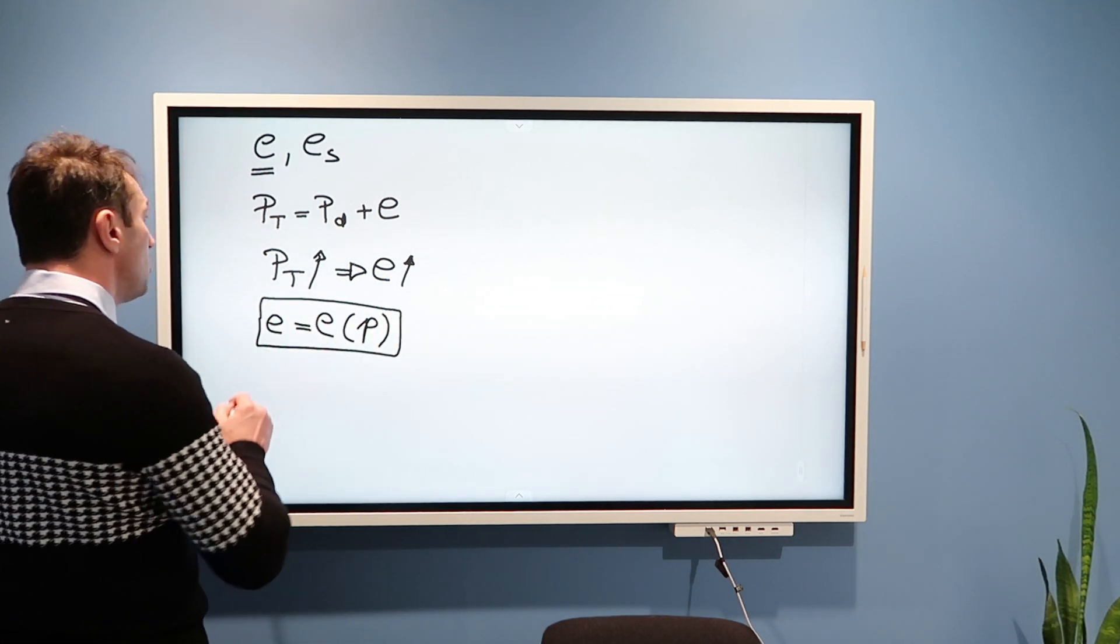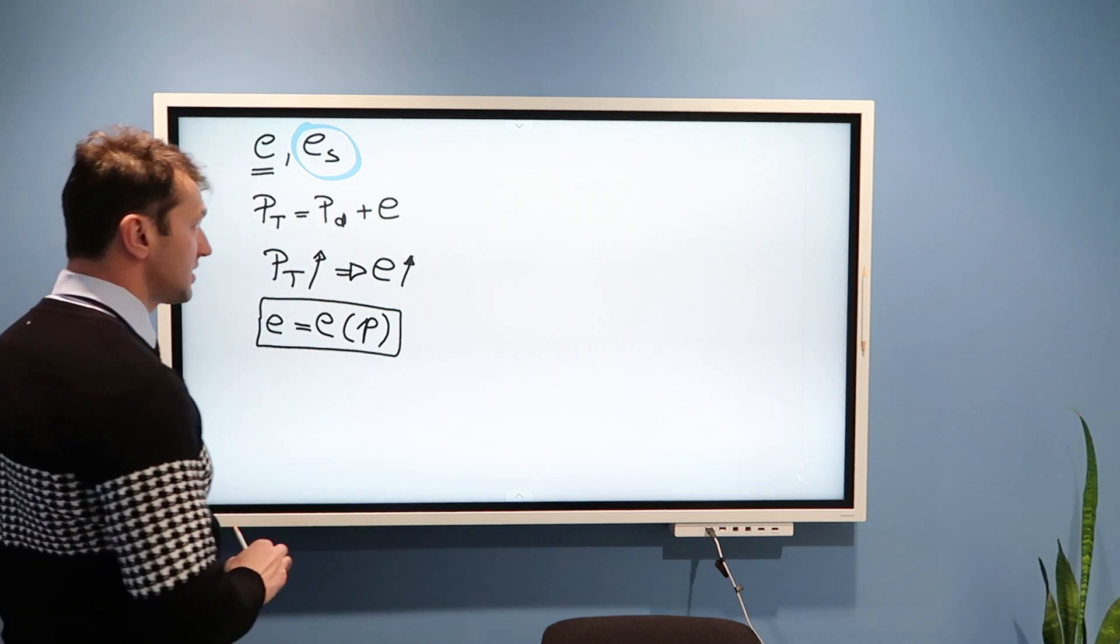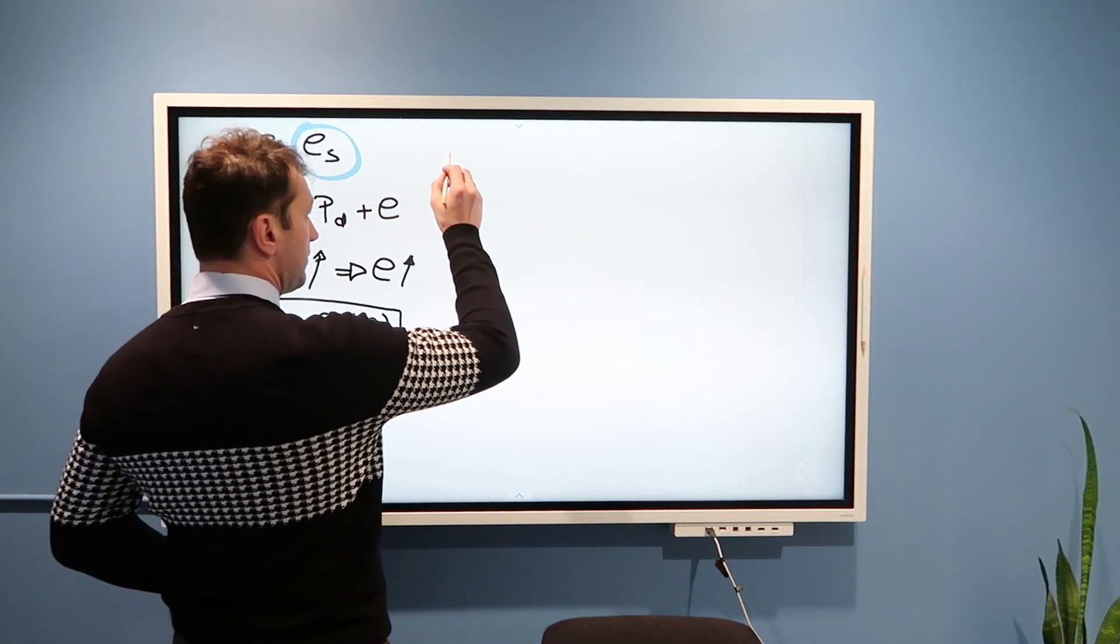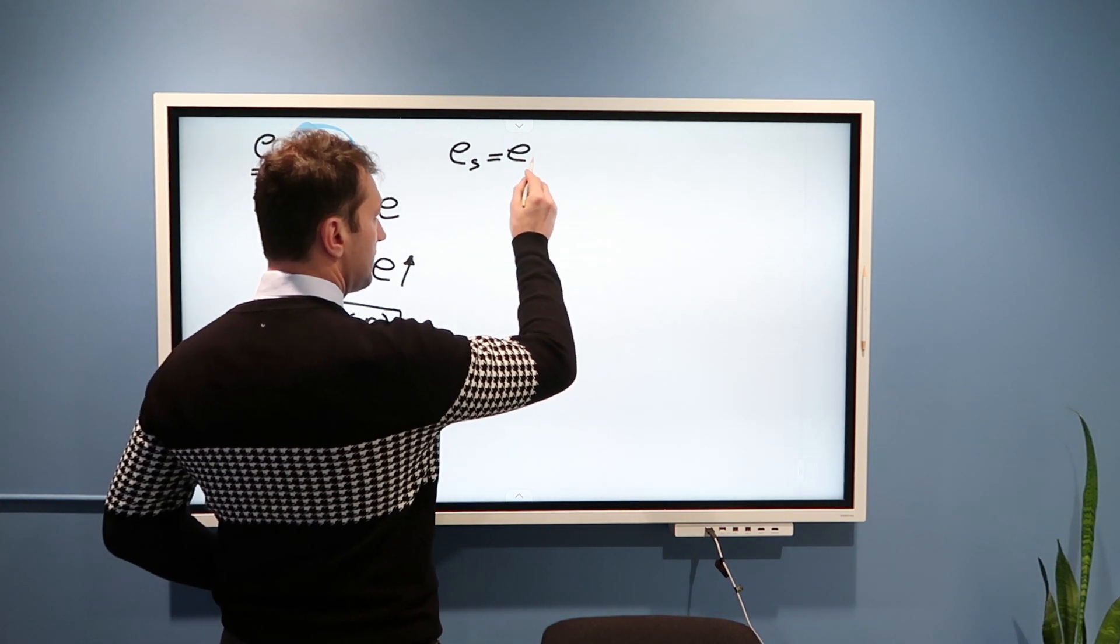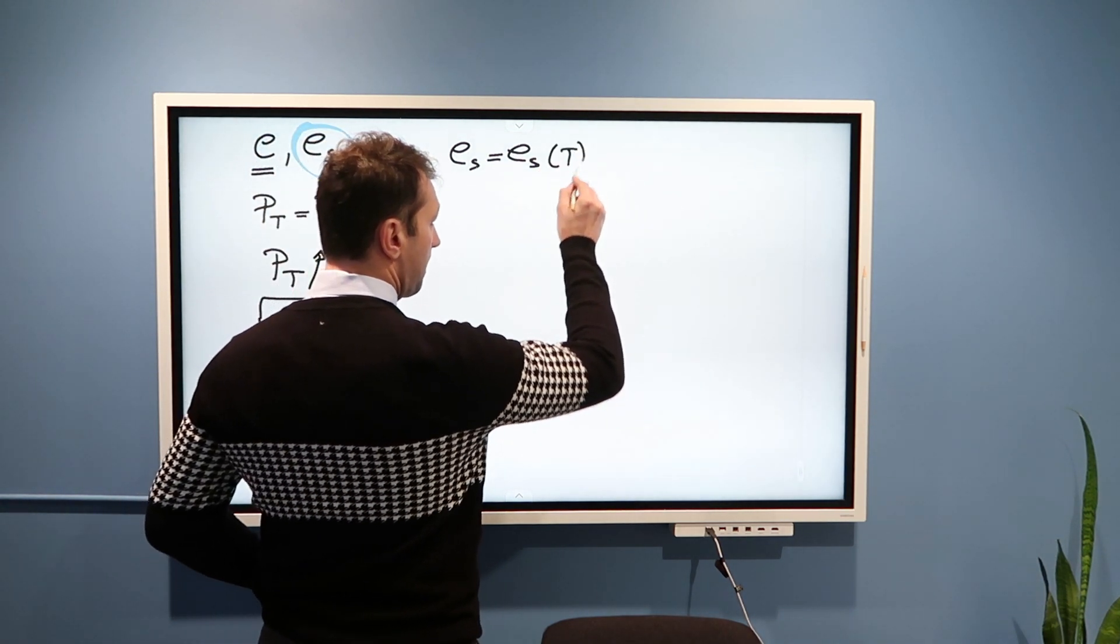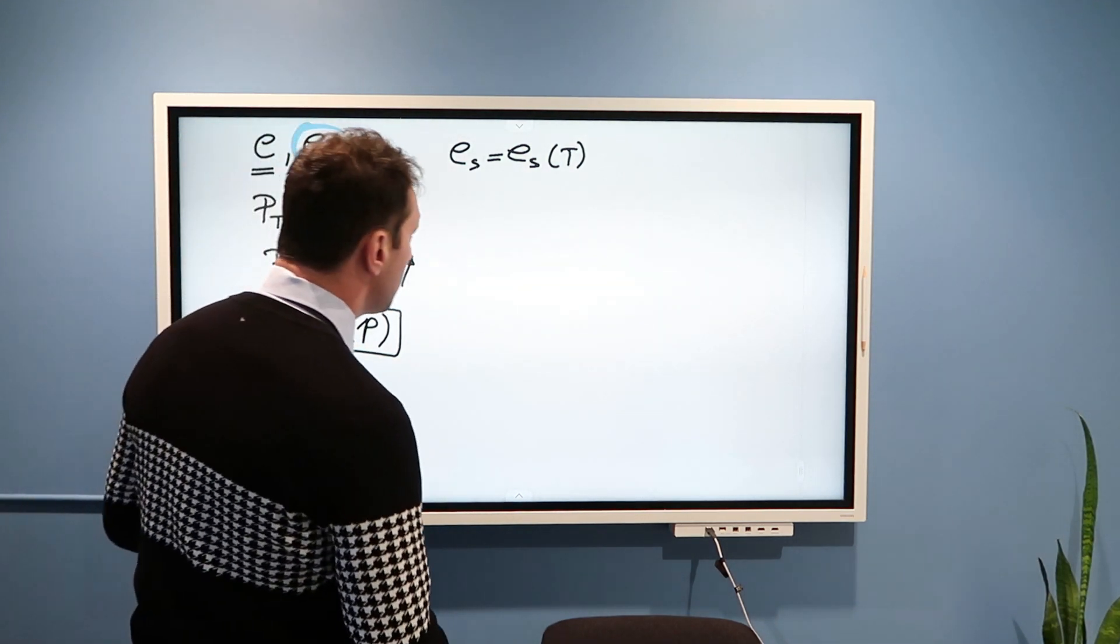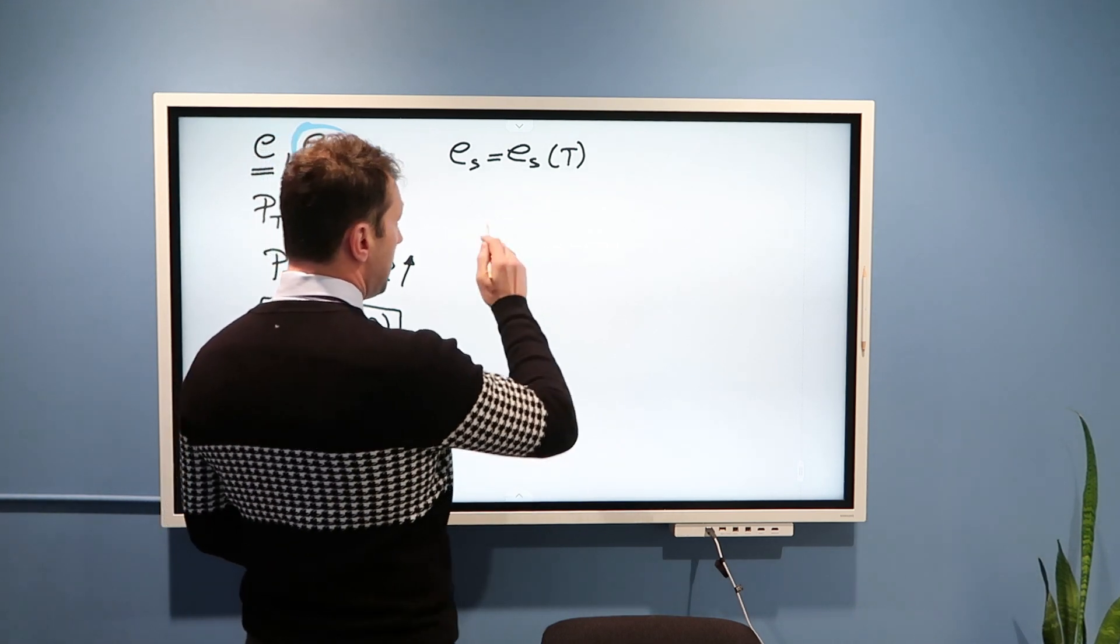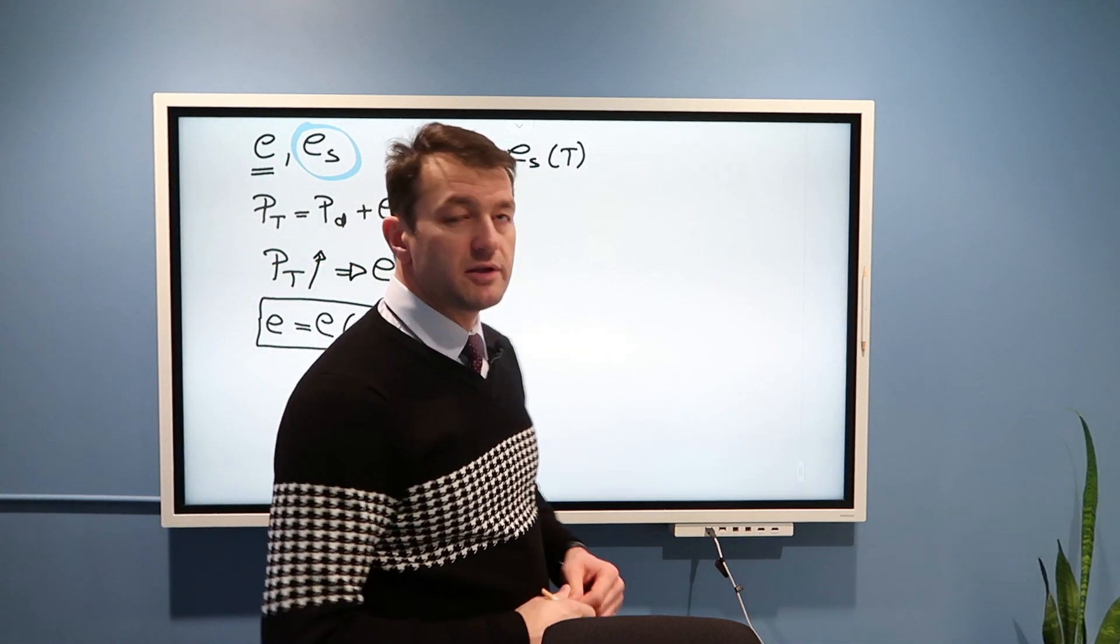This, however, is not the case for this variable, ES, that we will discuss today. This variable, ES, saturation vapor pressure, turns out, depends on temperature. And dependency is more complicated than this simple linear dependency. Namely, I will derive it later, but dependency is described through powerful Clausius-Clapeyron equation.